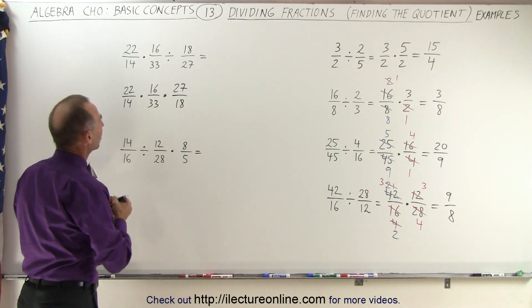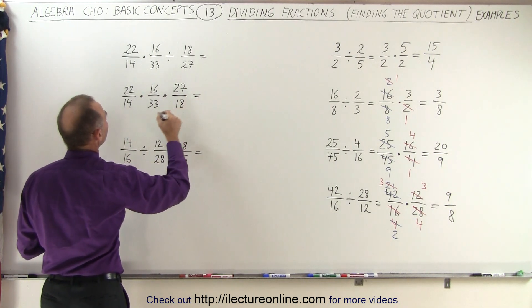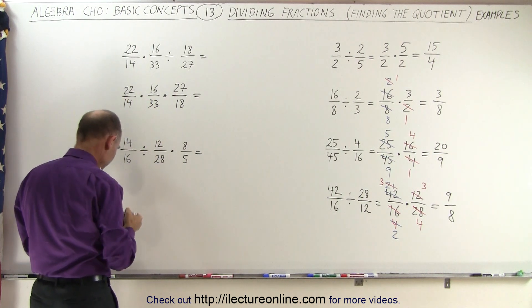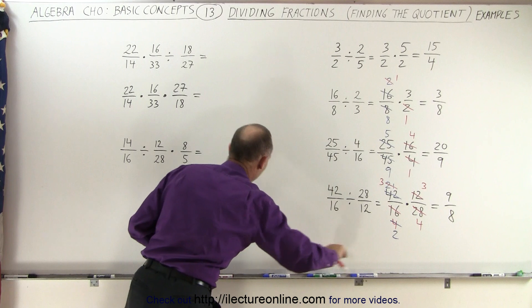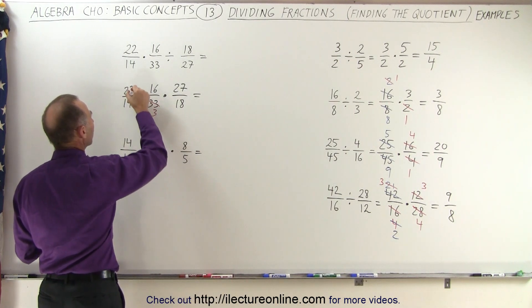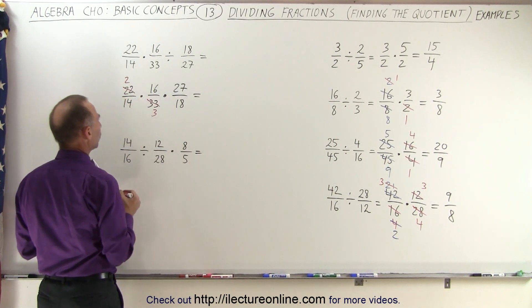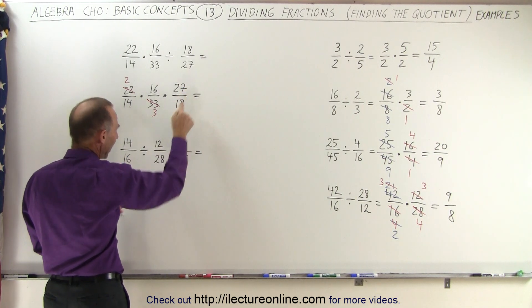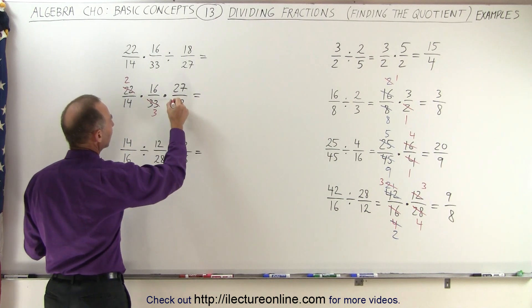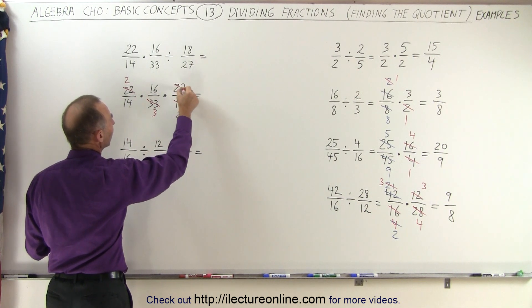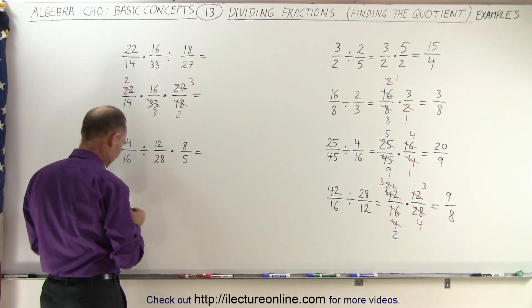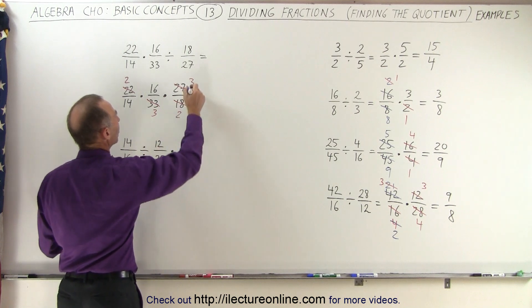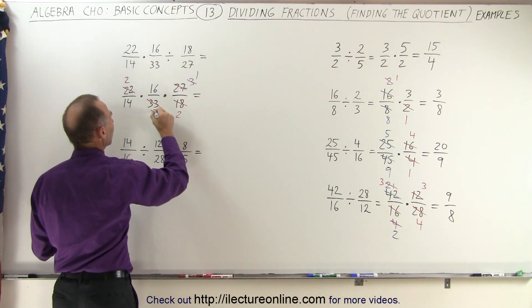So now we can try to reduce. We have a 22 here and a 33. Those are both divisible by 11. So 33 divided by 11 is 3, 22 divided by 11 is equal to 2. Here we have a 27 and 18. They're both divisible by 9. So 18 divided by 9 is 2, 27 divided by 9 is equal to 3. And then it becomes obvious that this 3 and this 3, we can simplify that or reduce that. 3 divided by 3 is 1, 3 divided by 3 is 1.